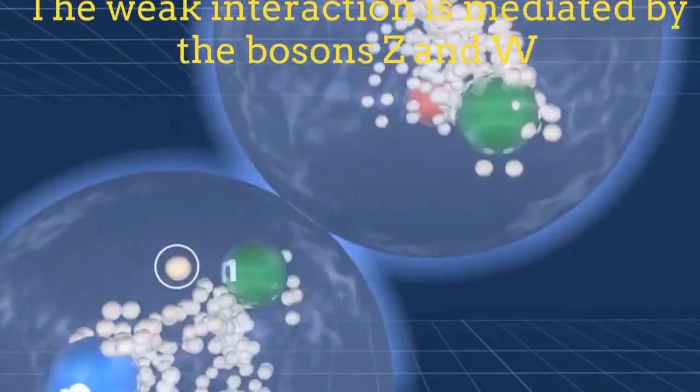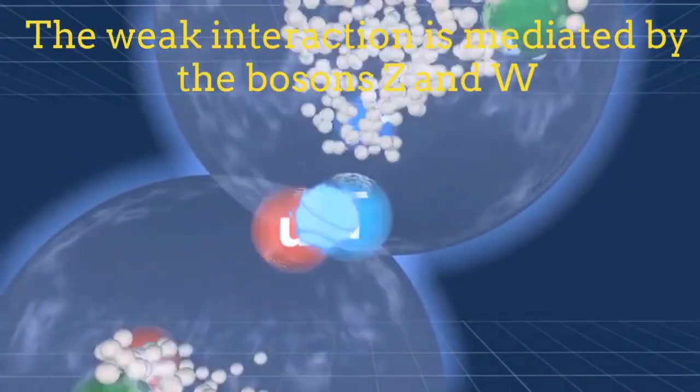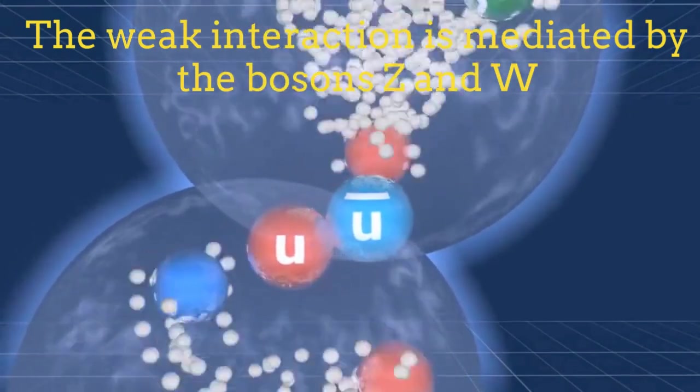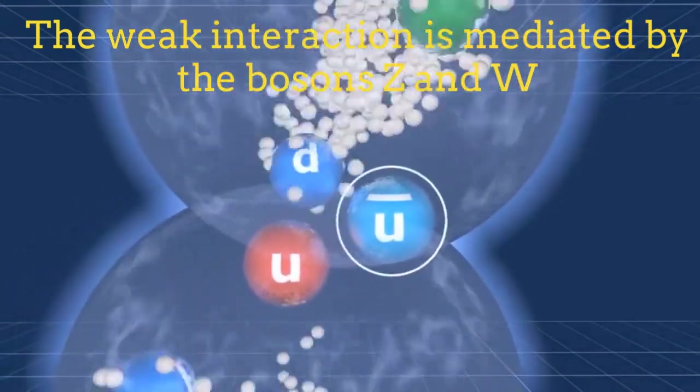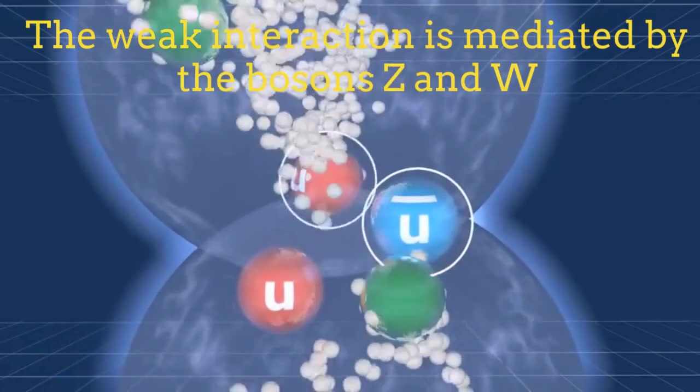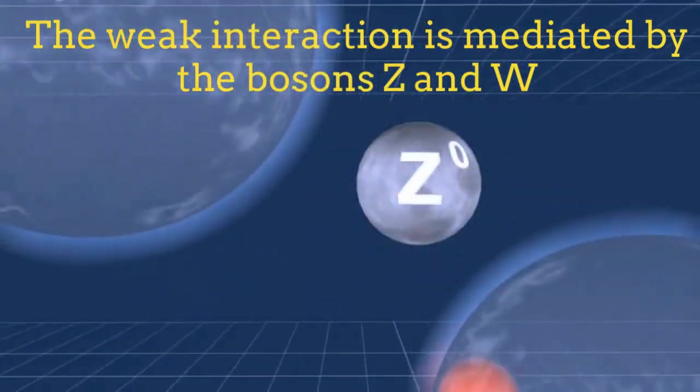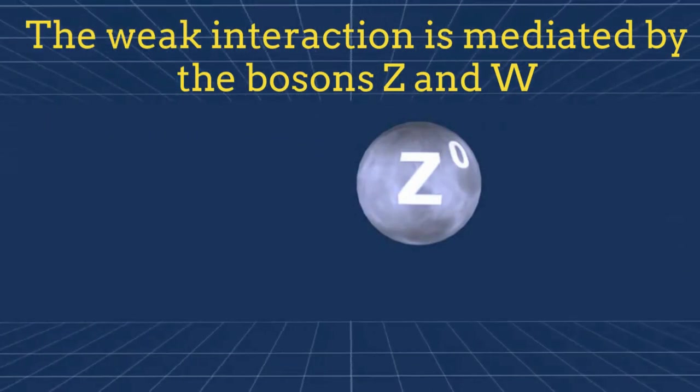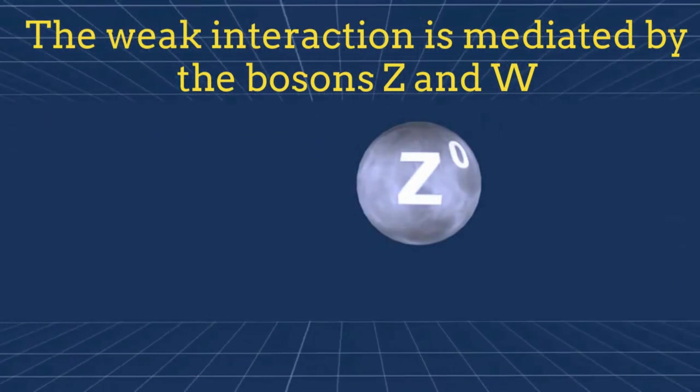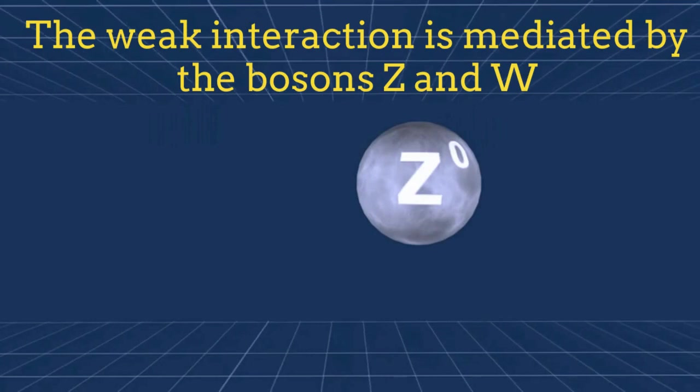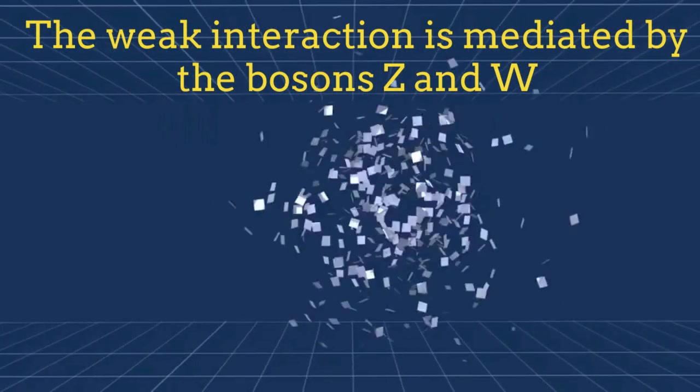The weak interaction is not only mediated by charged bosons, in addition, it is also mediated by a neutral boson called Z boson. The W and Z bosons have both very large masses, which make them very unstable, and as a consequence, the weak interaction has a very short range of propagation.